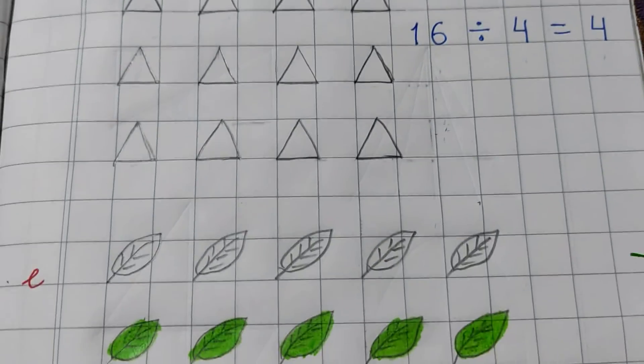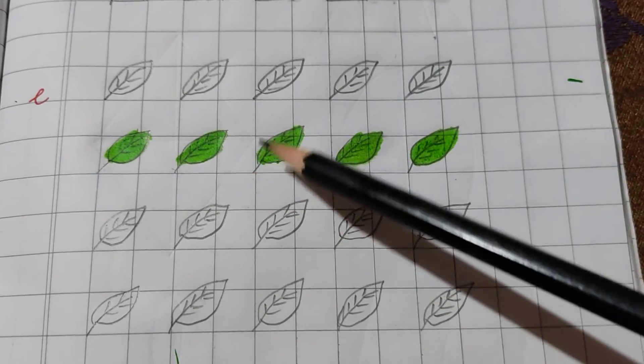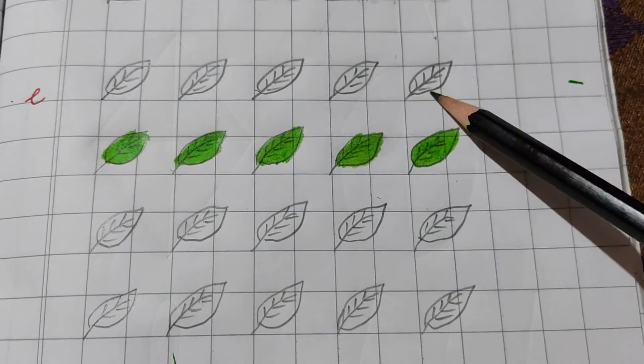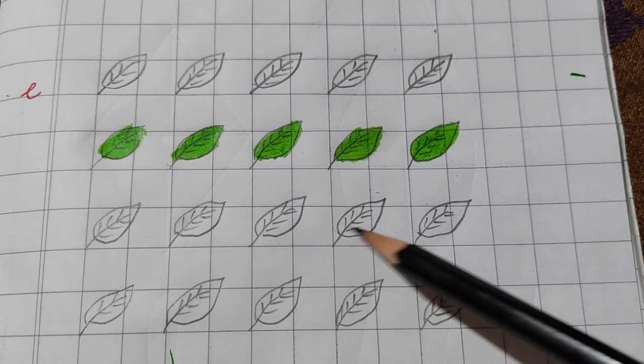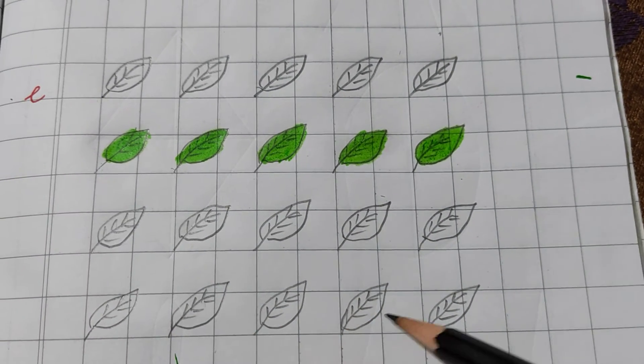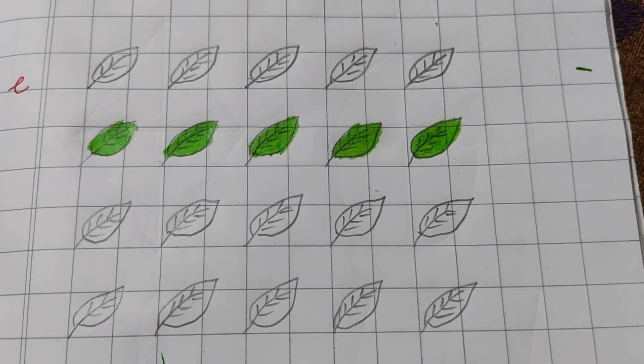Now, in the next part, I have drawn some leaves. So, these are 1, 2, 3, 4, 5, 6, 7, 8, 9, 10, 11, 12, 13, 14, 15, 16, 17, 18, 19, 20. These are 20 leaves.